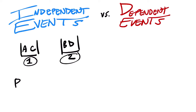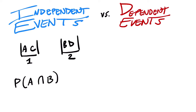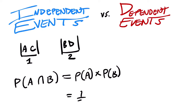What's the probability of picking out A and B? We take the probability of A — picking out the letter A, that's one out of two — and multiply it by the probability of getting B, which is also one out of two. That gives us one half times one half equals one fourth.